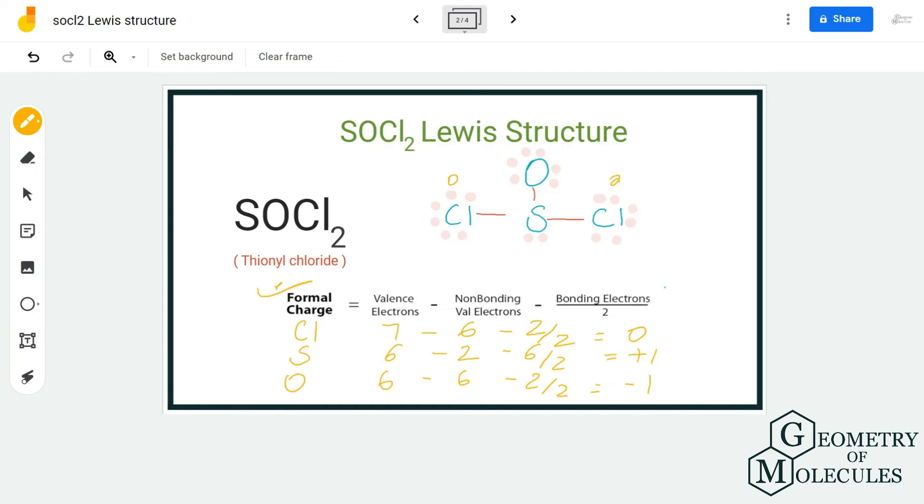One might argue that it is fine if there are charges on sulfur and oxygen atoms because the net charge is 0. But if you look at this, sulfur atom is less electronegative than oxygen atom, so it is not possible that sulfur atom will have a positive charge. One might argue that this structure could be the accepted Lewis structure for SOCl₂ as the net charges are 0.